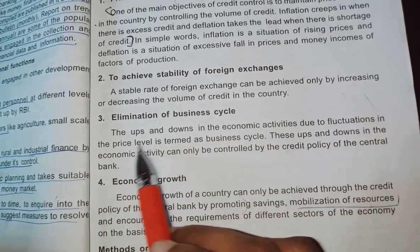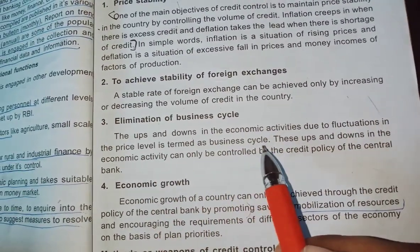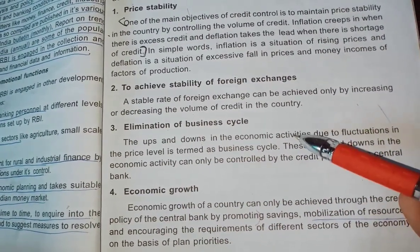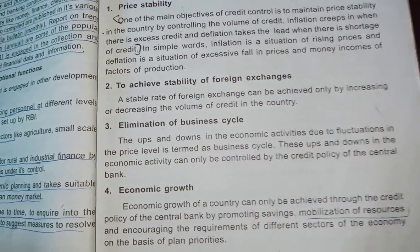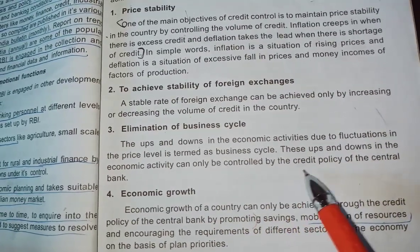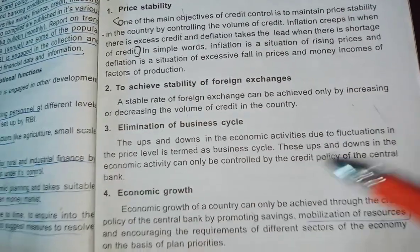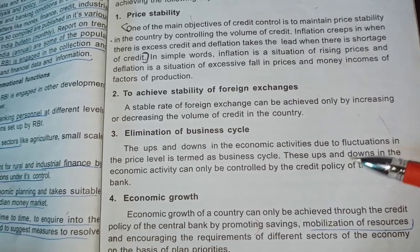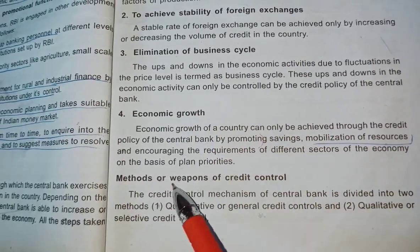Third, elimination of business cycle. The ups and downs in economic activities due to fluctuations in the price level is termed as the business cycle. These ups and downs in economic activity can only be controlled by the credit policy of the central bank.